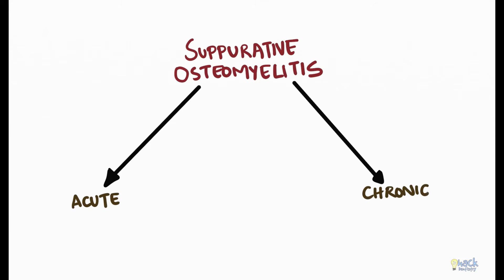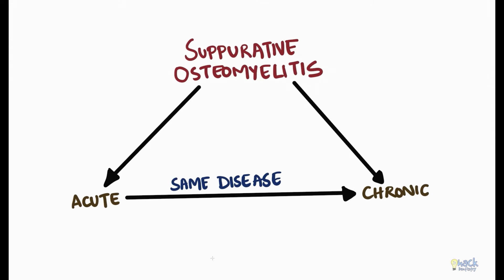Acute and chronic suppurative osteomyelitis are the same disease in different stages of their course. They are separated by an arbitrary time limit of one month. Hence, an acute suppurative osteomyelitis that continues its course without subsiding beyond four weeks is considered to be chronic suppurative osteomyelitis.